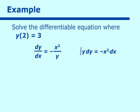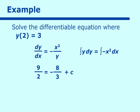Taking the integrals of each side, we get y²/2 = -x³/3 + c. Now we solve for c using y(2) = 3: substituting gives 9/2 = -8/3 + c. Putting this together, c = 7 and 1/6. So the solution is y²/2 = -x³/3 + 7⅙. We could solve for y by taking the square root (±), but this form is preferable.